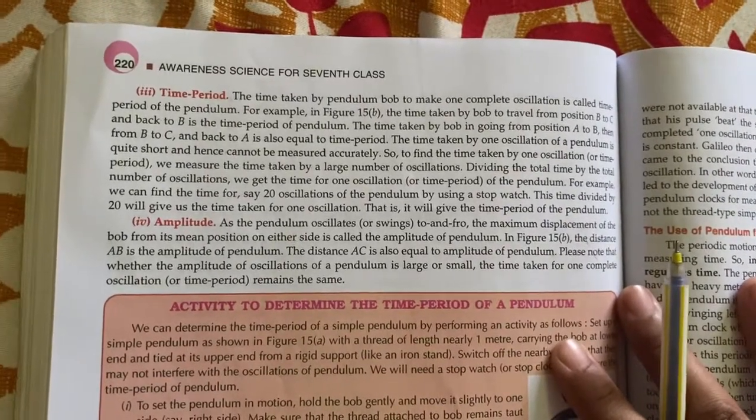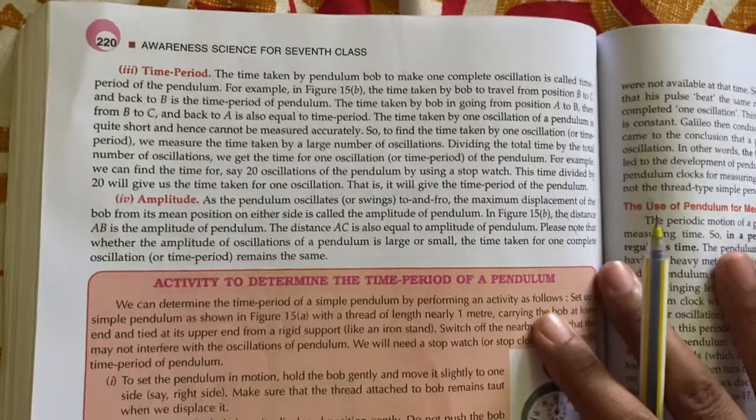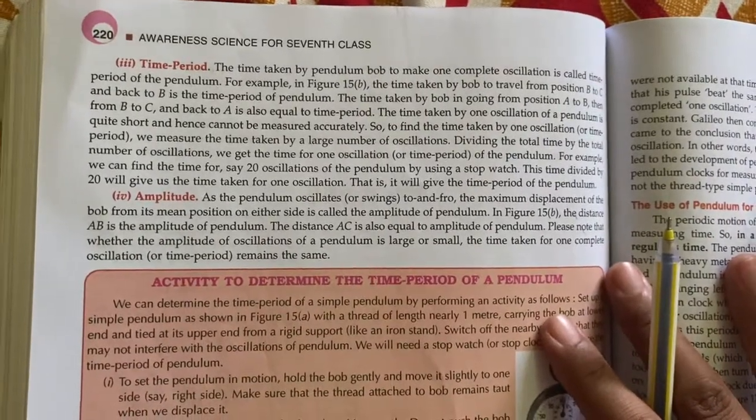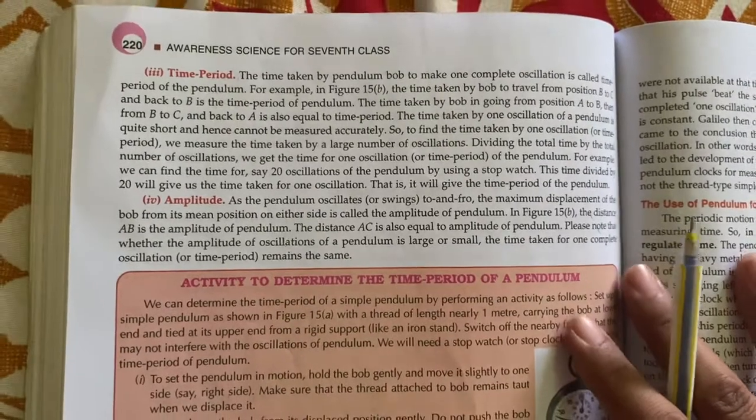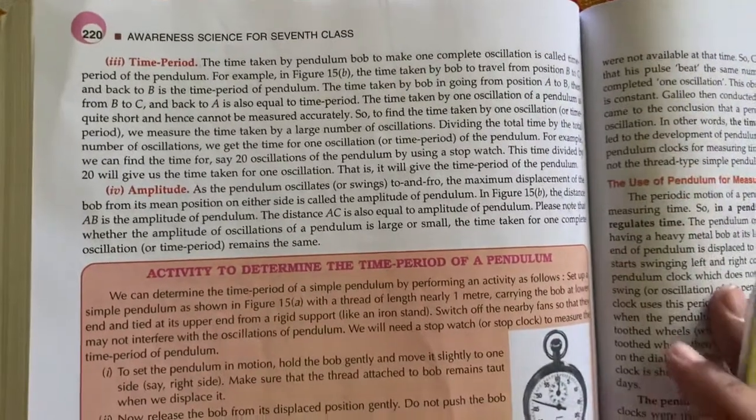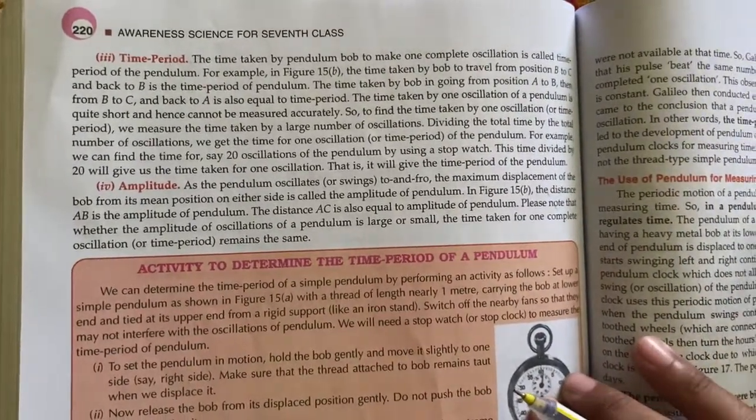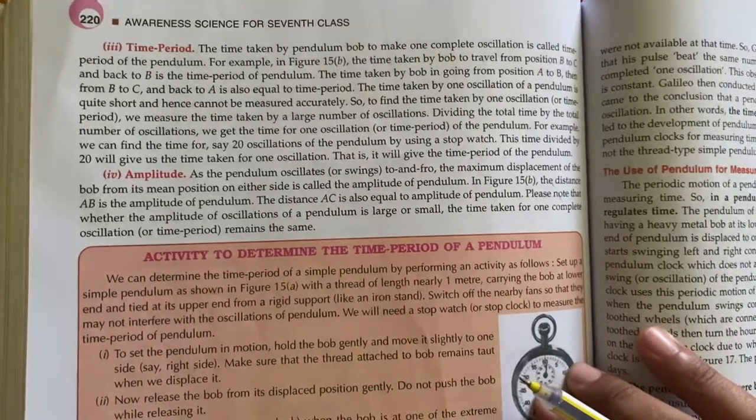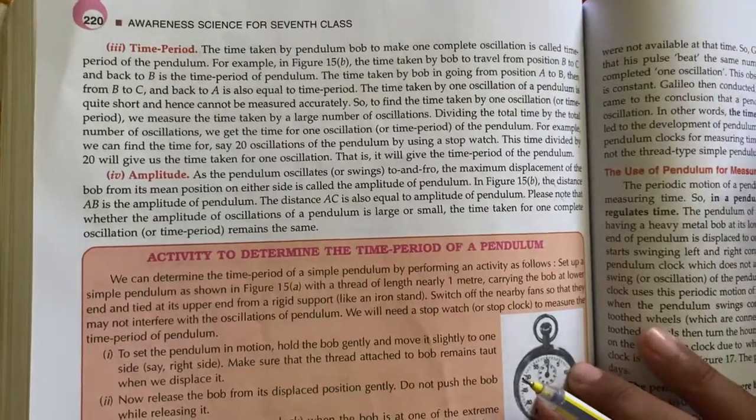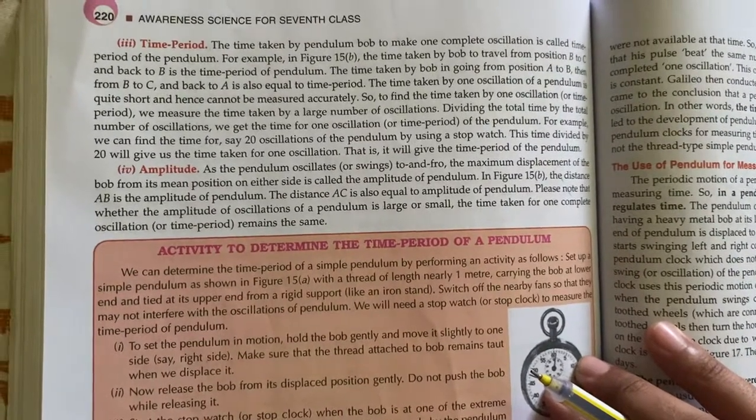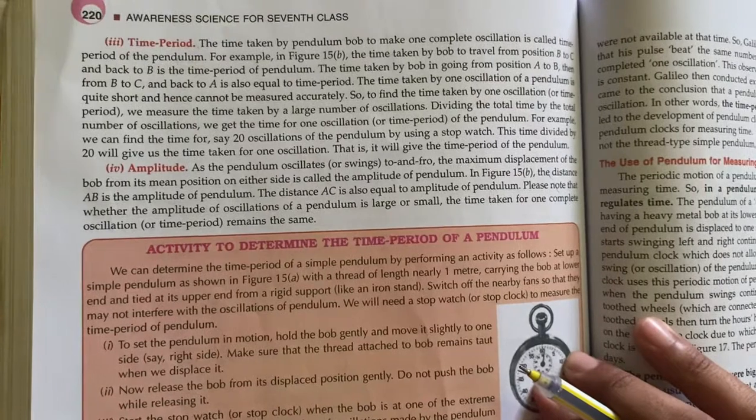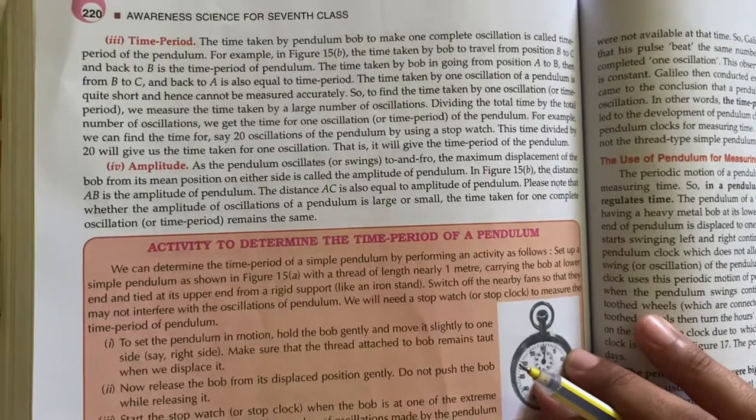Amplitude - as a pendulum oscillates to and fro, forward and backward, the maximum displacement from the mean position to the other side is amplitude. A to B or A to C, equal amplitude.